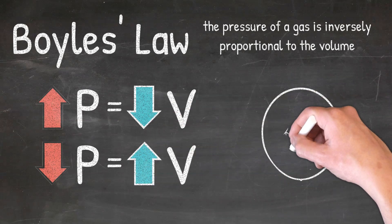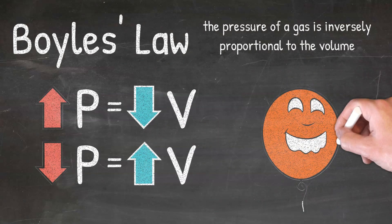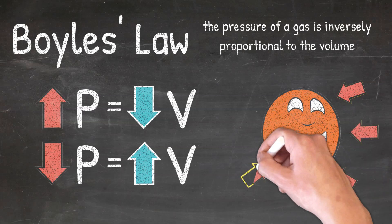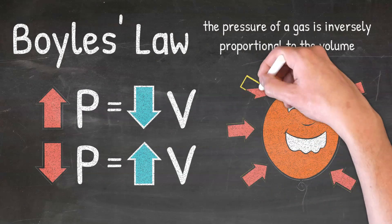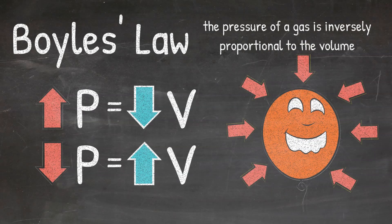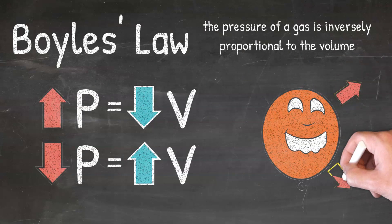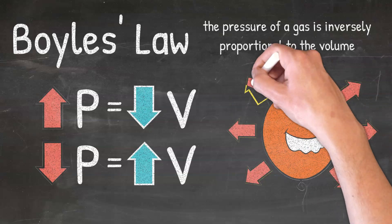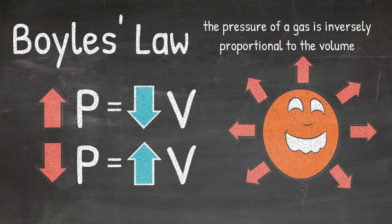For example, if you have a balloon and you increase the pressure on the balloon — meaning you press harder on the balloon from all sides — then the volume of that balloon will shrink, meaning it would get smaller. Or, if you were to take a balloon and decrease the pressure on the balloon, then the balloon would expand, showing an increase in the volume.